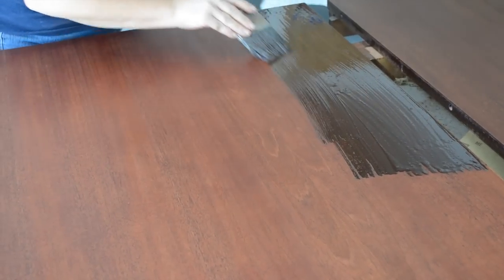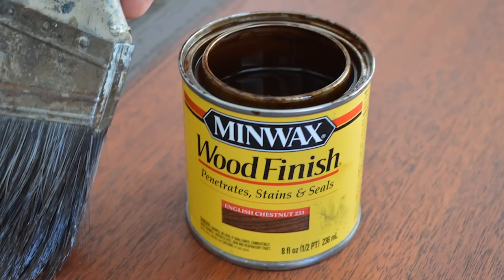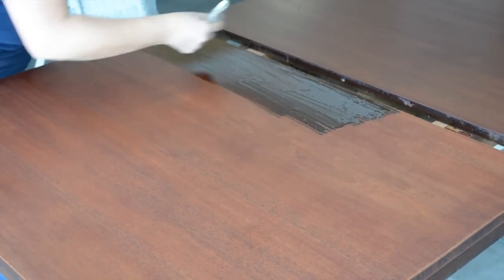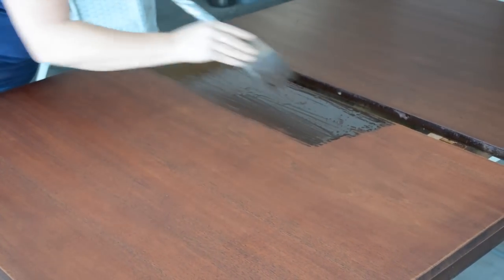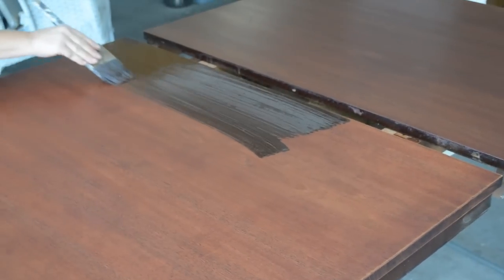Stain should be applied within two hours of the conditioner. I like to use Minwax Stain for my refinishing projects. This tabletop is mahogany and it was very red in color. I wanted to tone that down a bit so I chose to use English Chestnut rather than red mahogany.